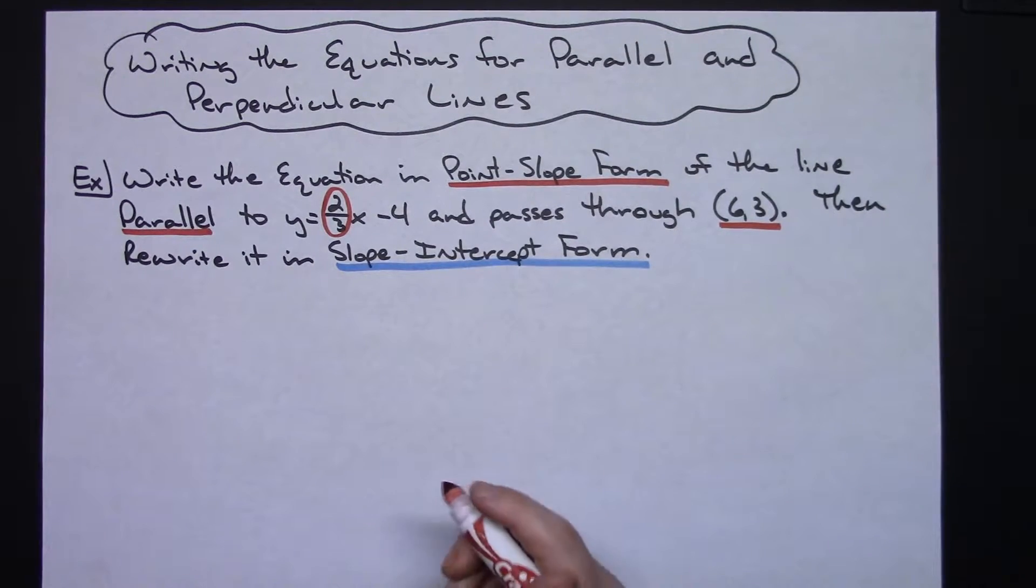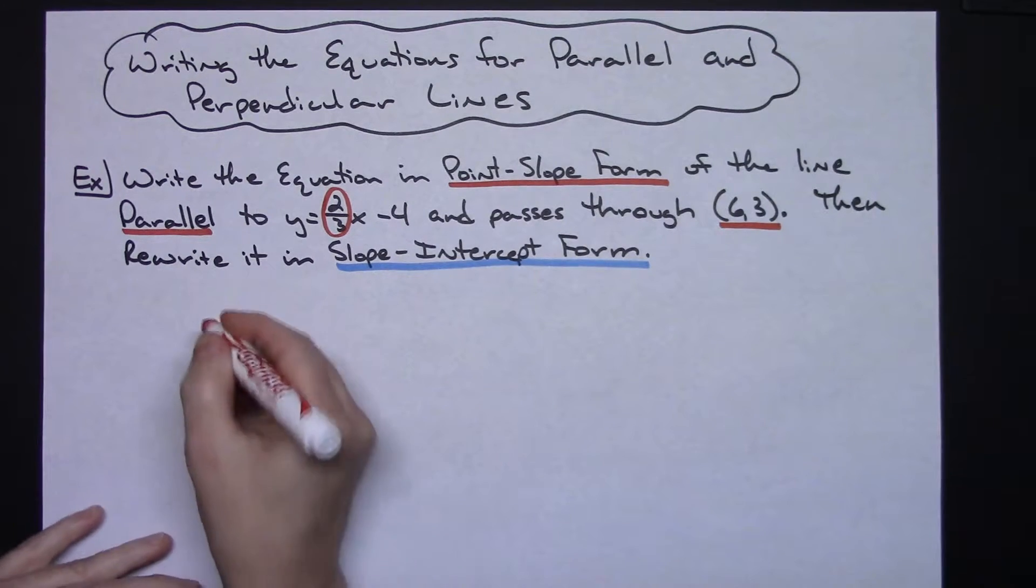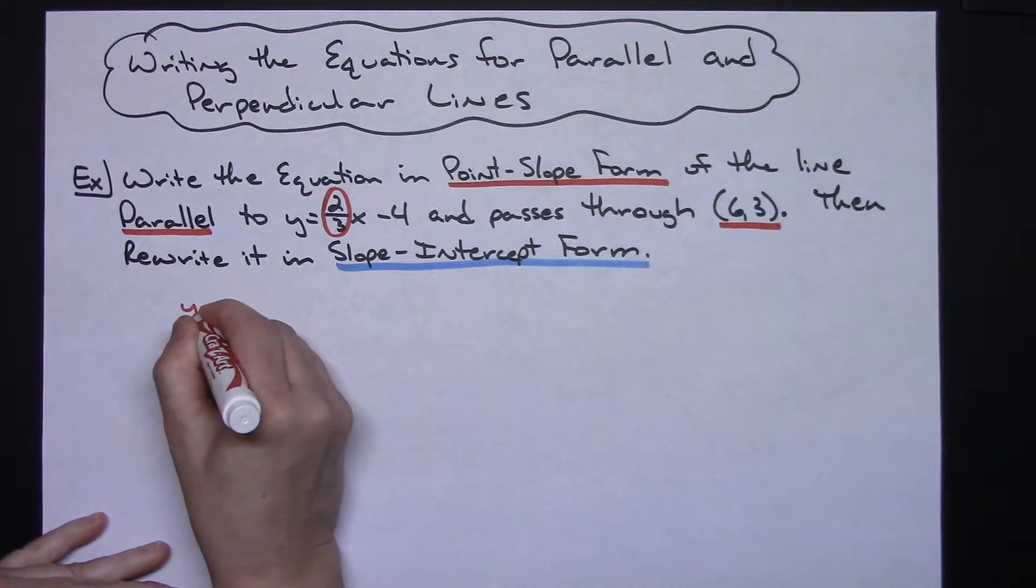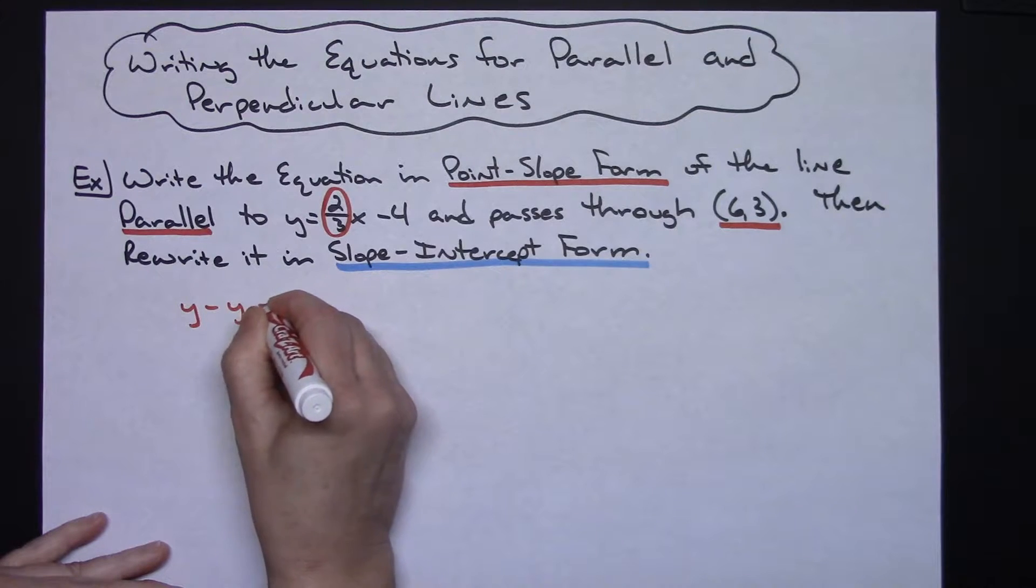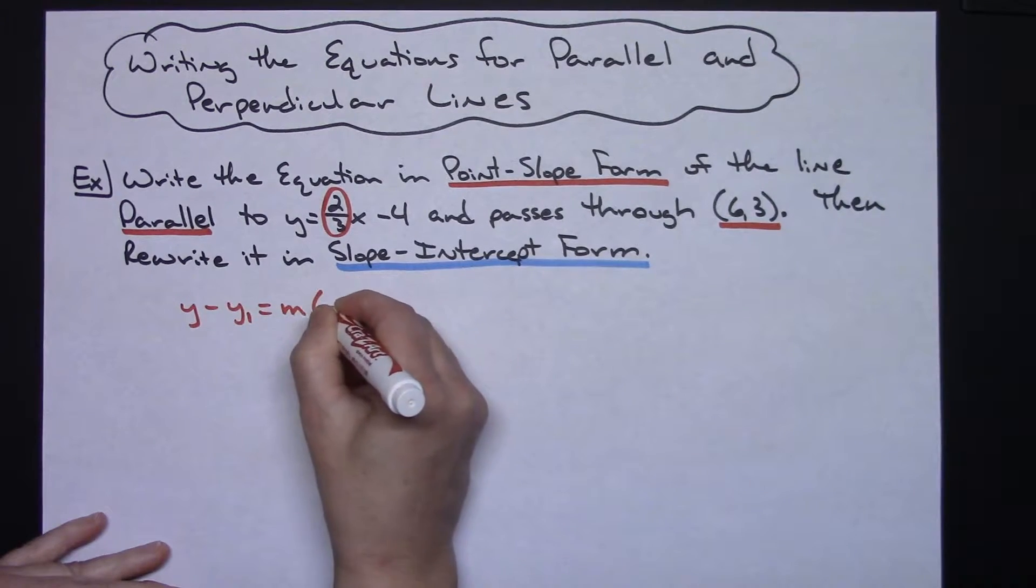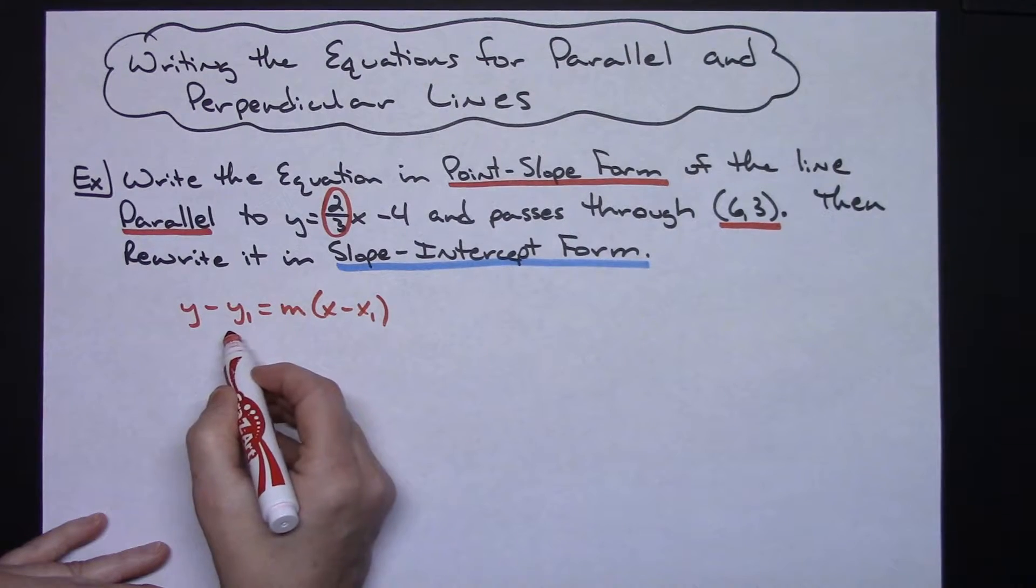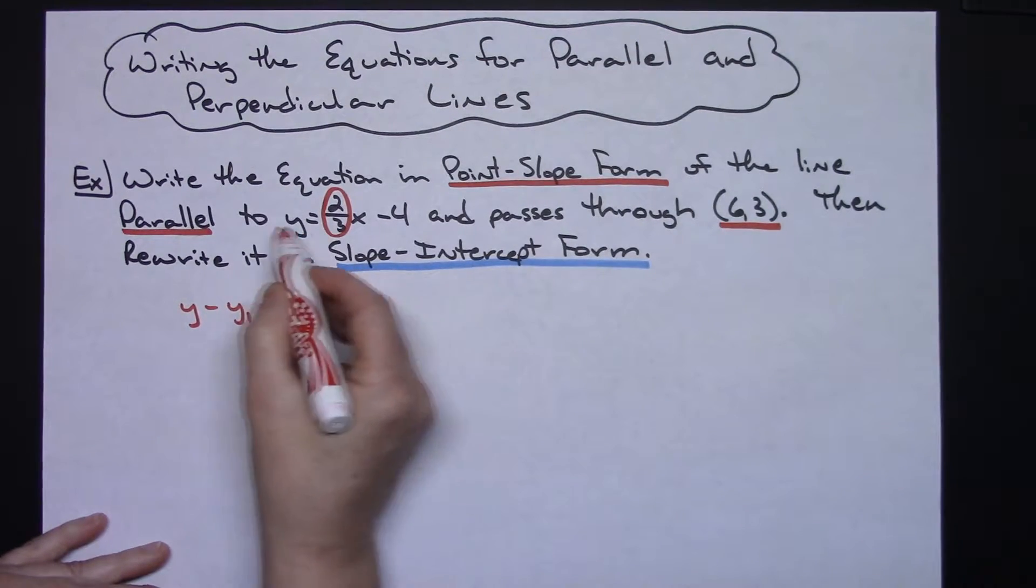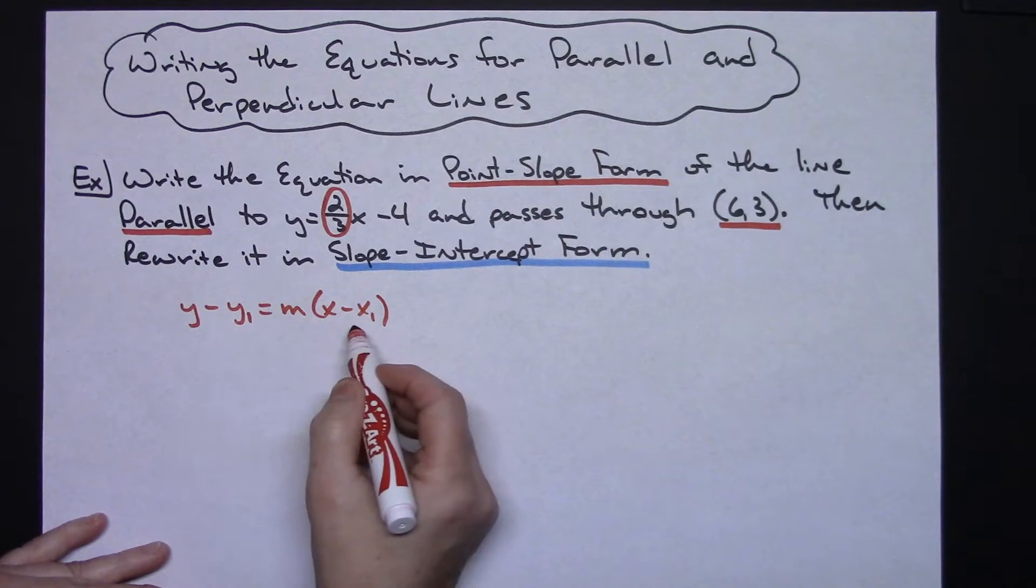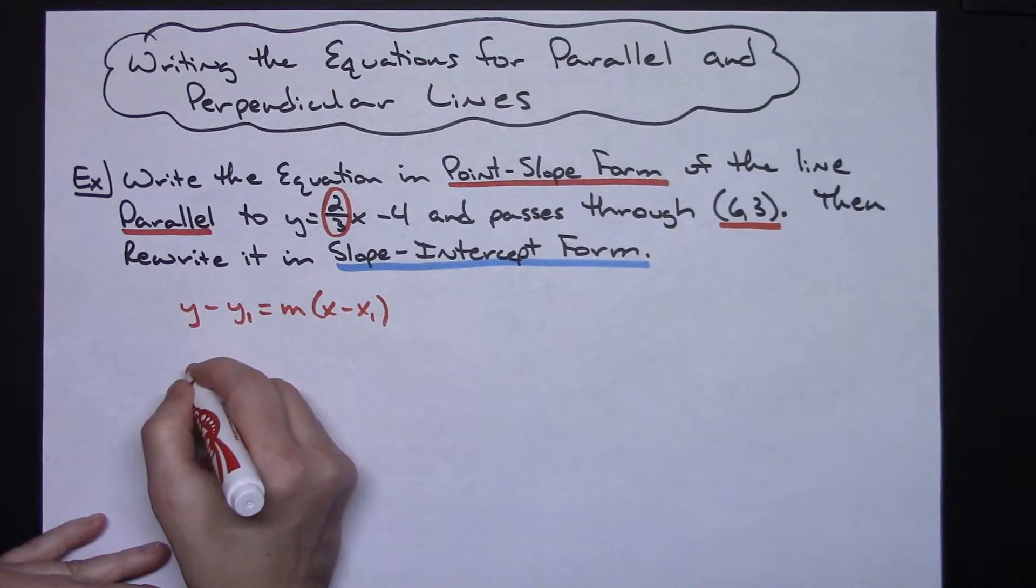Okay, so as we recall, point-slope form is y minus y₁ equals m times the quantity x minus x sub 1. So I'm going to replace my point and replace my slope, my parallel slope, so the same slope, and write the equation.